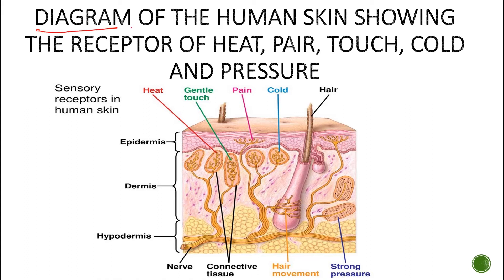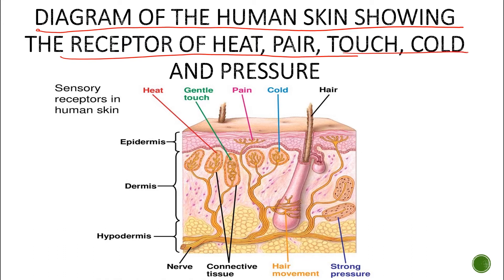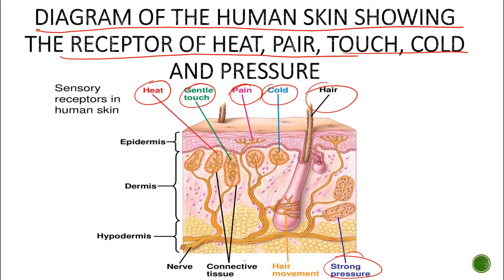Here is a diagram of the human skin showing the receptors of heat, pain, touch, cold, and pressure. These receptors are found in different layers of the skin: the epidermis, the dermis, and the hypodermis. Pain receptors are located in the epidermis, while heat receptors, touch receptors, cold receptors, and pressure receptors are all located in the dermis.